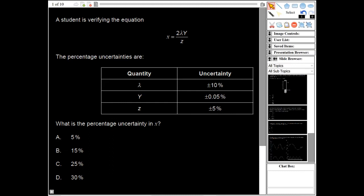Okay, so in this video I'm going to look at some multiple choice questions of physics. These are higher paper one physics from paper one time zone one May 2019. The first question says the student is verifying the equation.